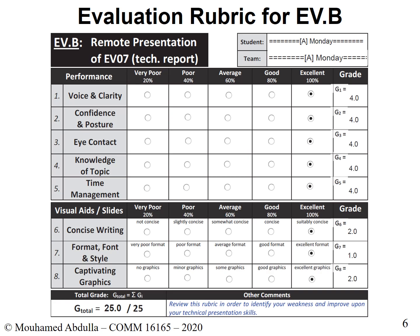Now let me go through the evaluation rubric for EVB. There are two components: the presentation performance component worth 20 marks out of 25, and the visual aids and slides component worth 5 marks out of 25 — that's 80% and 20% respectively. The rubric uses a spectrum from very poor to excellent, and importantly there is no zero — the minimum is 20%. The first criterion is voice and clarity: is your voice clear, proper, and consistent with the message you're trying to convey?